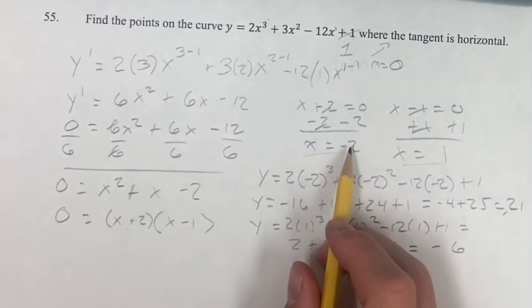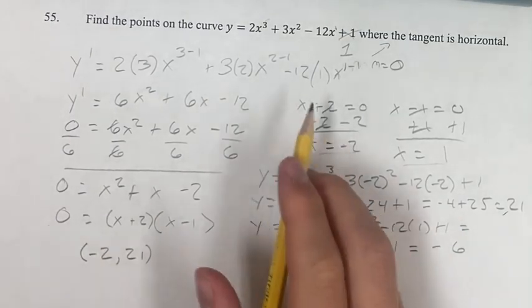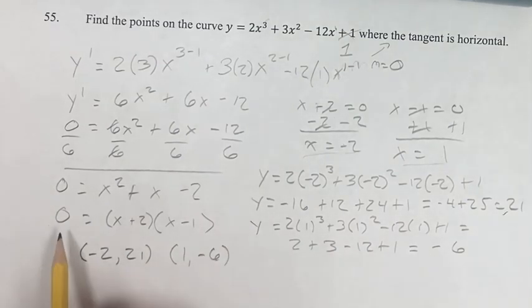So the points on the curve where the tangent is horizontal, we have negative 2, 21 and we have 1, negative 6. And that's going to be the final answer.